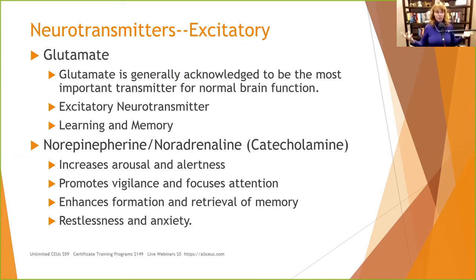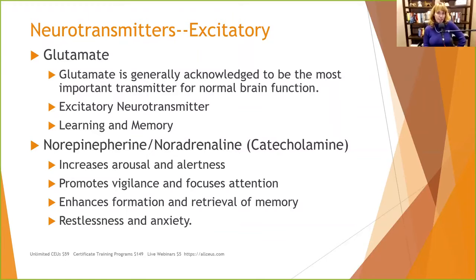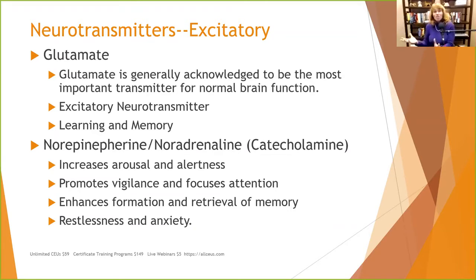Glutamate is generally acknowledged to be the most important neurotransmitter for brain functioning, and it's excitatory. It provides energy, and is responsible for learning and memory. Glutamine, an amino acid you eat, is converted into glutamate. Interestingly, GABA is made by the breakdown of glutamate - so if you have glutamate, you can have GABA, and if you don't have enough glutamate, you won't have enough GABA. It's a balance, like making a warm bath.